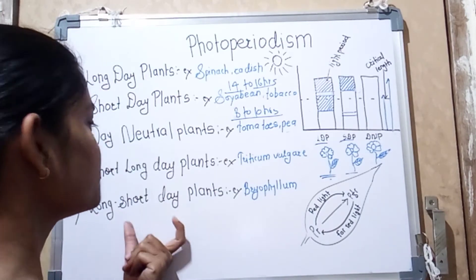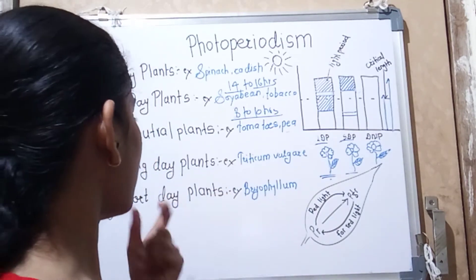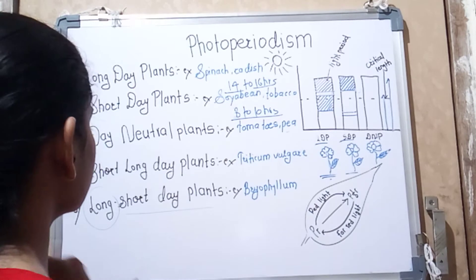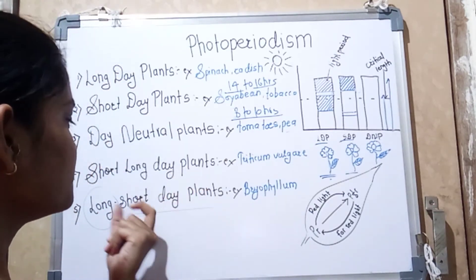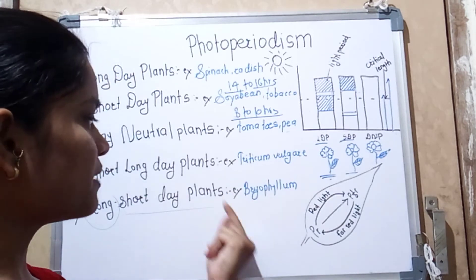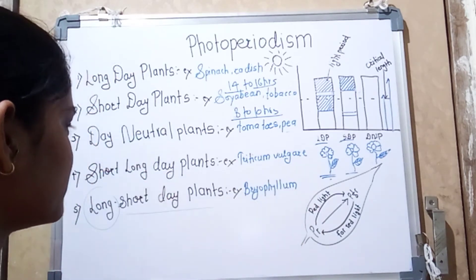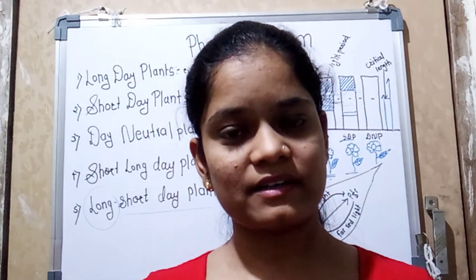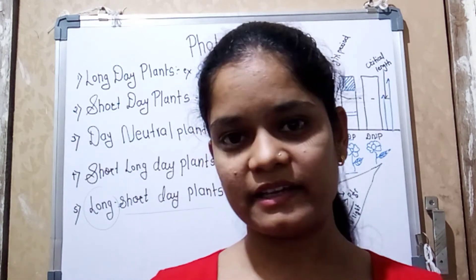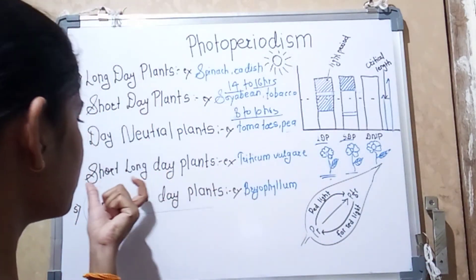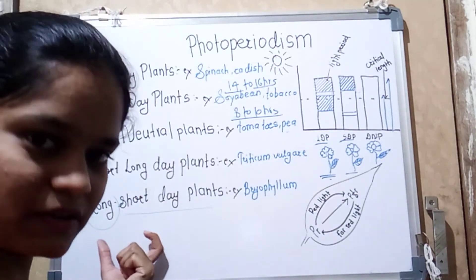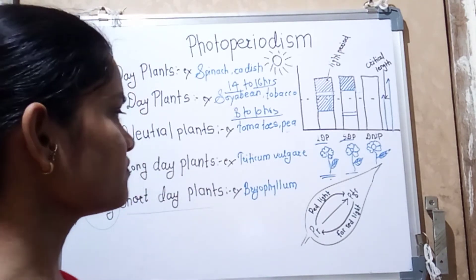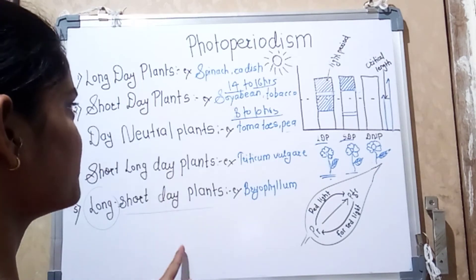The fifth is the long-short day plant. These plants are usually short day plants, but initially they require a long day, then later they require a short day. An example is Bryophyllum. In summary, both types require a different day length at the initial stage of life and then a different day length later on.